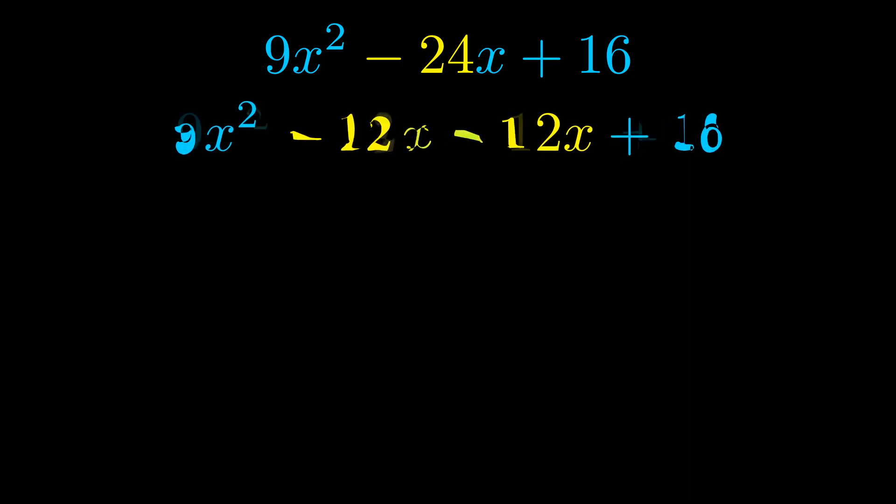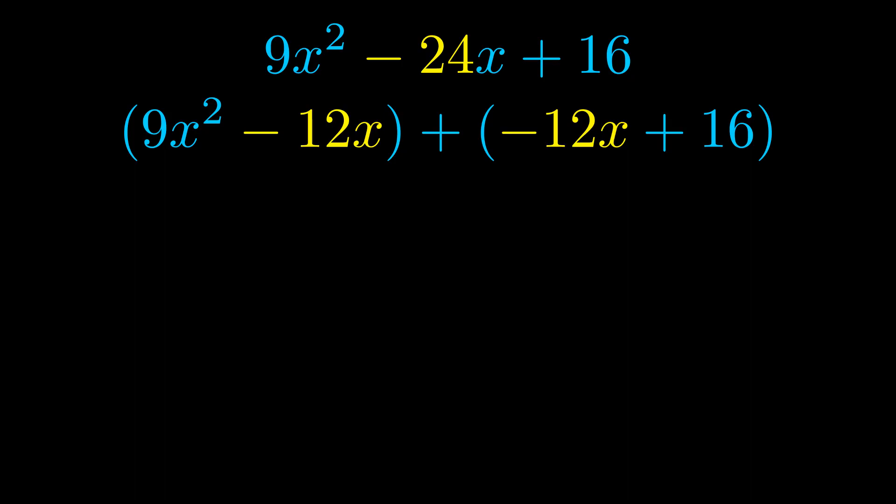Once we've done this we go ahead and we put parentheses around the first term and the last term. And we do that so that we can take the greatest common factor out of both terms. We can see the greatest common factor is now outside in green.